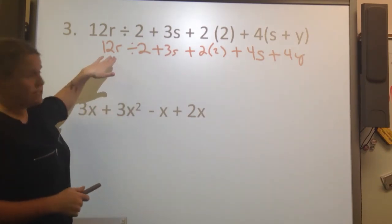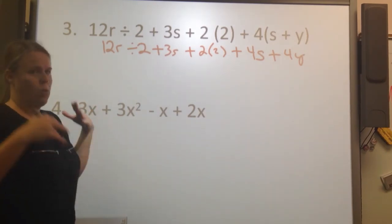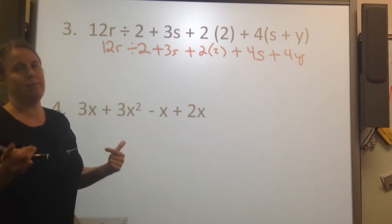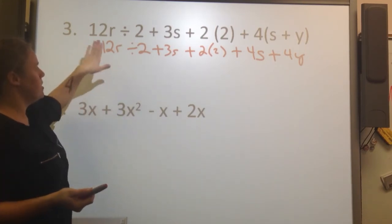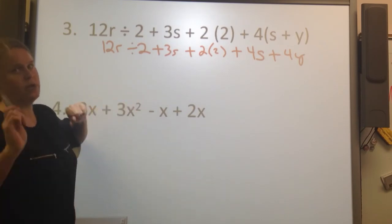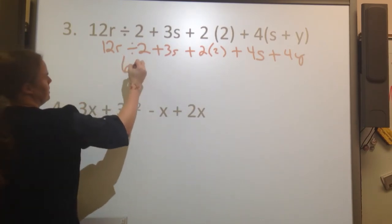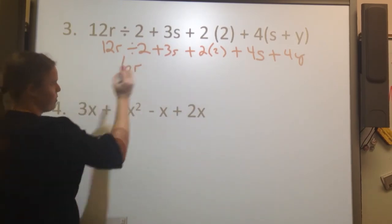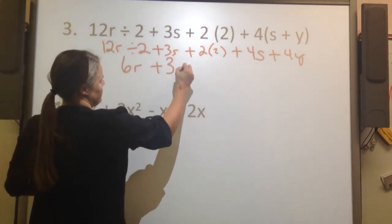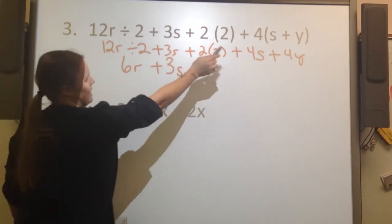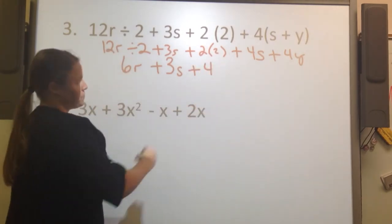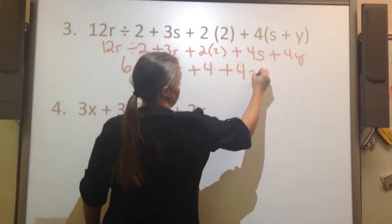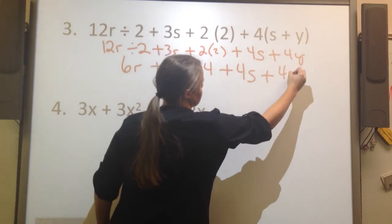We have 12r divided by 2. What are we going to do? Remember, you don't have to have like terms to divide with variables. So 12r divided by 2, you got it, 6r. Bring down my 3s. I can go ahead and multiply my 2 times 2 and get 4 plus 4s plus 4y.